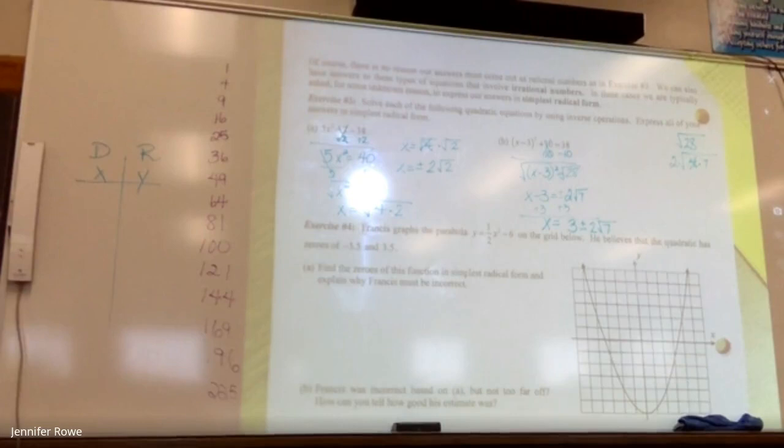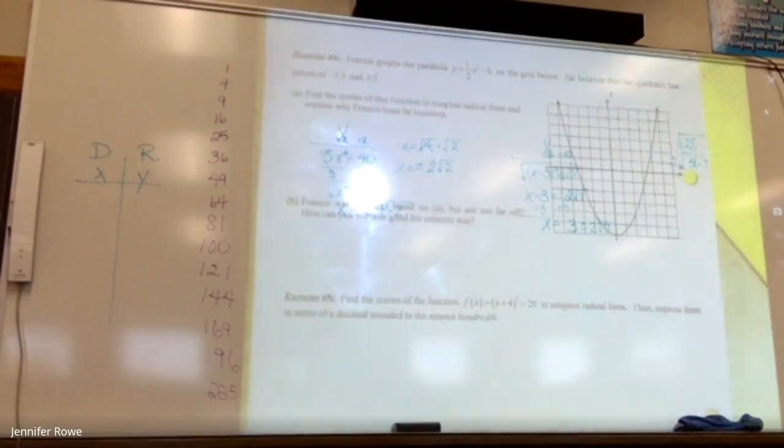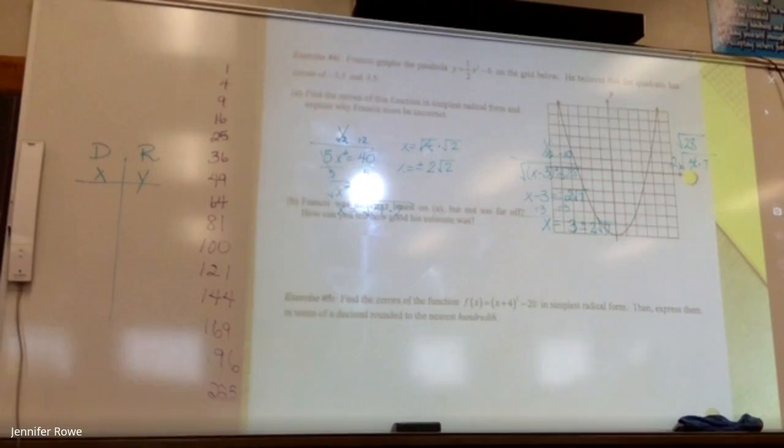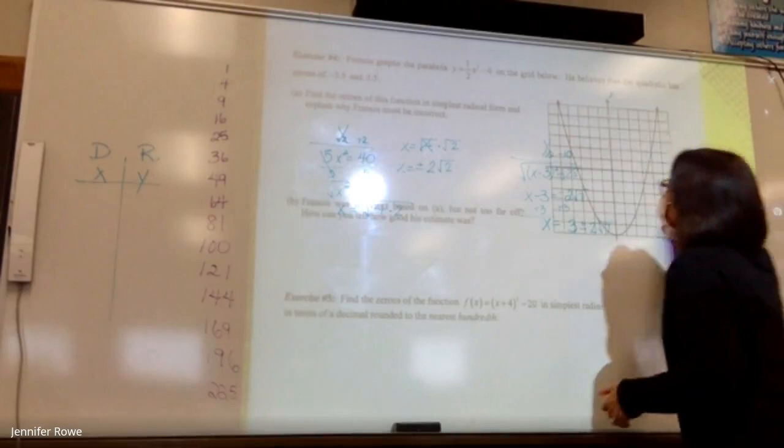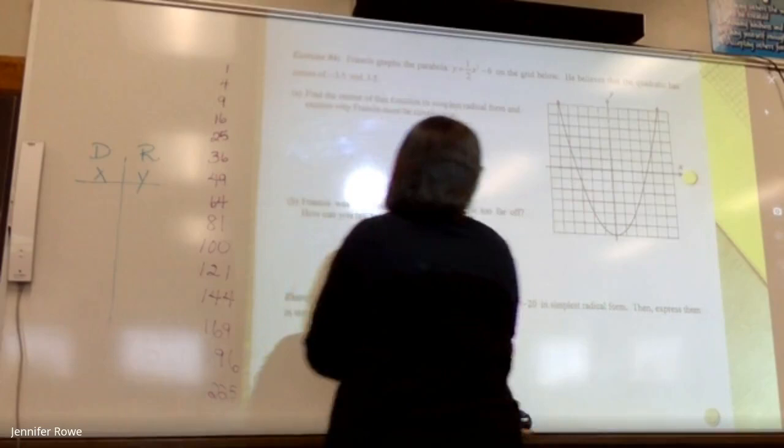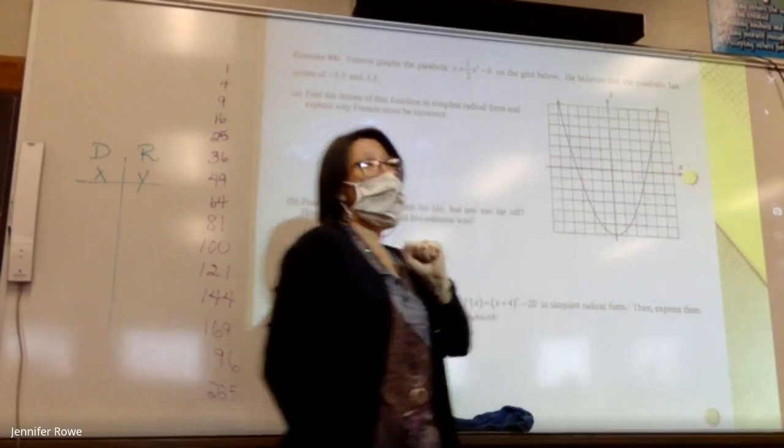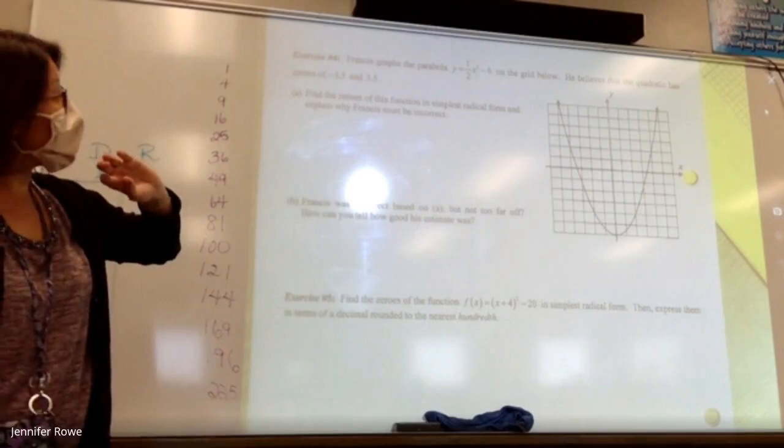Francis graphs the parabola y equals one half x squared minus 6 on the grid. He believes that the quadratic zeros are negative 3.5 and 3.5. Okay, well first of all, what the heck are zeros? What are zeros on a graph? Where the line touches the x-axis. Yes, zeros are these two things right here, where the parabola touches the x-axis. Okay. Find the zeros of this function in simplest radical form and explain why Francis must be incorrect.